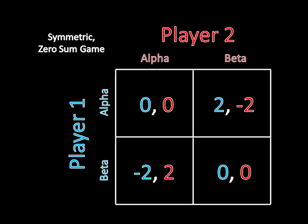If we look at the alpha-beta game, we'll see how this works. Can this be a Nash equilibrium where player one plays beta and player two plays alpha? No — player one is the loser, earning negative two by playing beta, and player two is the winner, earning two by playing alpha. Player one can just copy the winner's strategy and play alpha instead, switching from earning negative two to zero, which is a profitable deviation for player one.